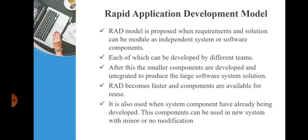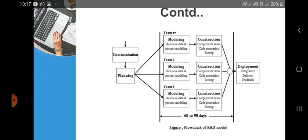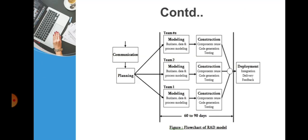After this, the small components which are developed by different teams are integrated to produce a large software system solution. So the RAD Model becomes very faster and it finishes within a very short period of time and the components which are available can be reused again and again. Here you can see the diagrammatic representation for RAD Model, which consists of modeling phases such as business modeling, data modeling and process modeling. At last, you can see the whole integration of smaller software components developed by the different development teams.